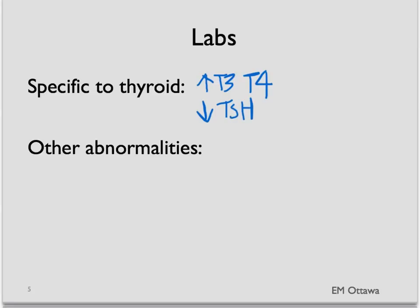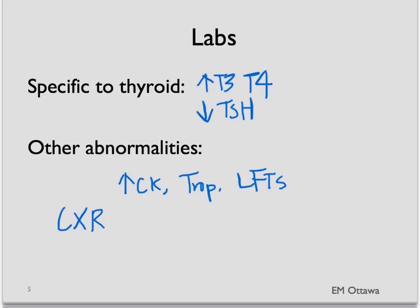Because of the effects of thyroid storm on the body, we expect the patient to have a high CK, sometimes a high troponin, and elevated LFTs. In a patient who is short of breath or in pulmonary edema, a chest X-ray is often helpful. Also, if the patient has any tachyarrhythmia, a 12-lead ECG or rhythm strip would be very helpful in sorting this out.